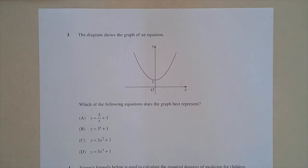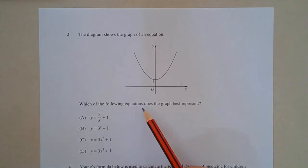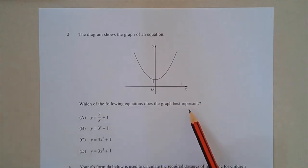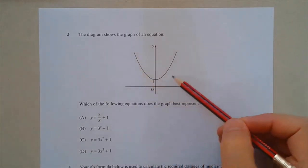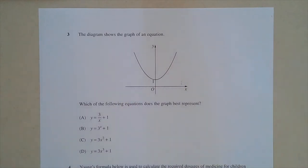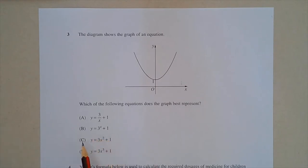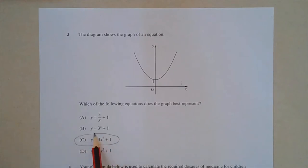Question 3. The diagram shows the graph of an equation — which of the following equations does the graph best represent? This u-shaped curve is a parabola, corresponding to an equation where the highest power of x is 2. Option C is the only equation where the highest power of x is 2. So the answer is option C.